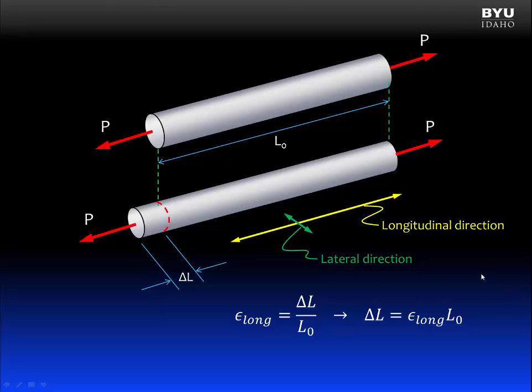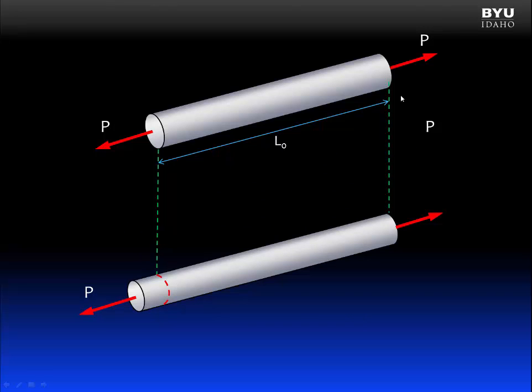Let's think about what happens to the lateral direction of this member when we apply an axial load. The force applied is a tension force. It is stretching the member. So the member's length in the direction of the force increases, or the member gets longer. What happens to the lateral dimension?